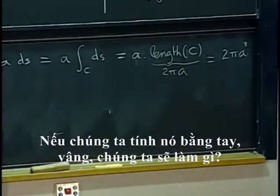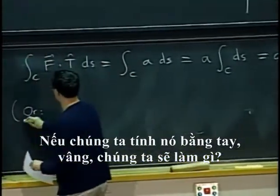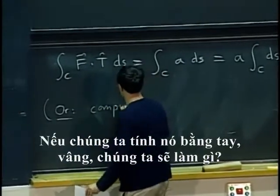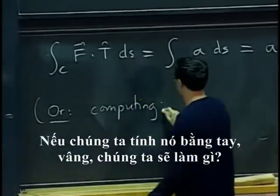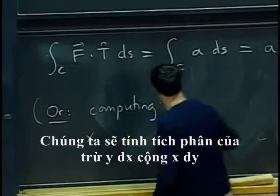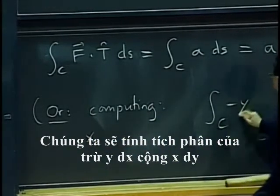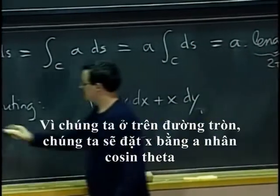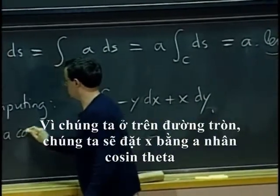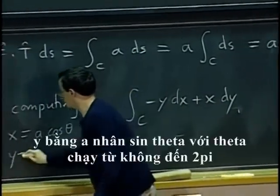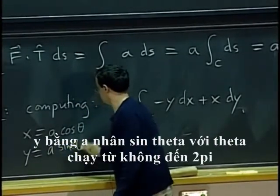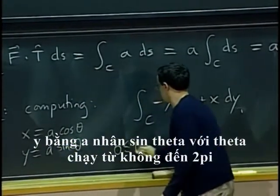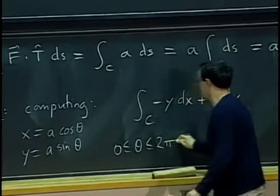If we were to compute that by hand, what would we do? We would be computing integral of minus y dx plus x dy. We would probably set, since we are on a circle, x equals a cos theta, y equals a sine theta for theta between 0 and 2 pi.